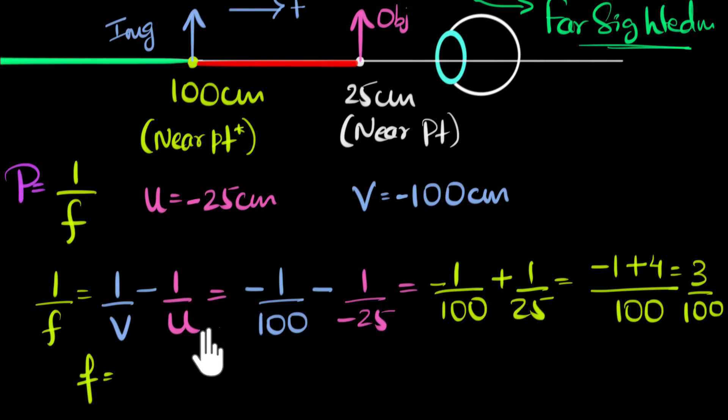So the focal length is the reciprocal of that. That's going to be 100 over 3. And we'll just keep it as it is. So this is the focal length, so many centimeters. And notice, since we're getting a positive answer, this means the principal focus is on this side. So whatever lens we're going to use, its principal focus is on this side.